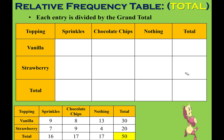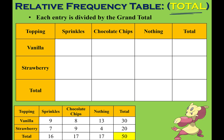Now we're going to take this frequency table and turn them into percents based off of the total. 100%, or 1, represents all of the students. What percentage liked sprinkles? That's 16 out of 50, which is 0.32. What percent chose chocolate chip? That's 17 out of 50, giving me 0.34. How many chose nothing for their topping? That was also 17 out of 50, which is 0.34.